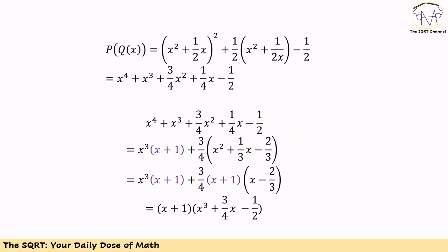Now that we have P(x) and Q(x), we can calculate P(Q(x)). We simply substitute Q(x) into each variable in P(x) and simplify. Doing so gives us: x⁴ + x³ + (3/4)x² + (1/4)x - 1/2.